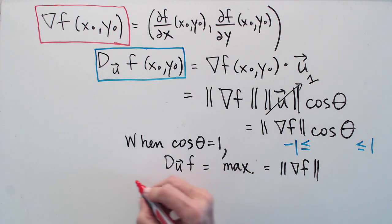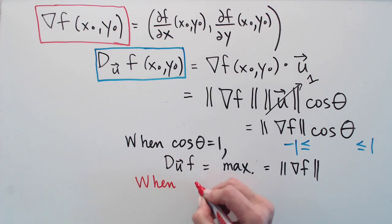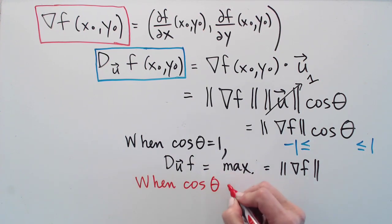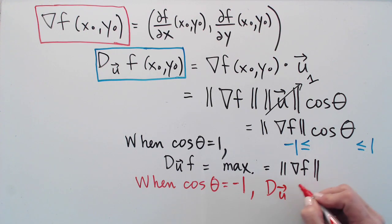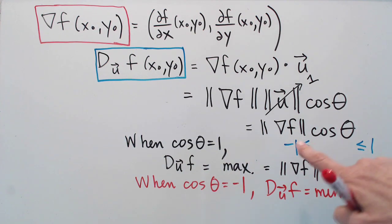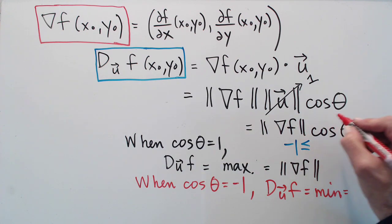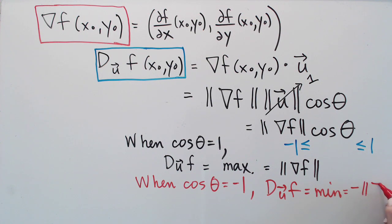By contrast, when cos theta is minus 1, the directional derivative is a minimum. Because that's the smallest. Otherwise this is a number between minus 1 and 1. It's a minimum and that value, this would now be minus 1, is the negative of the length of the gradient vector.